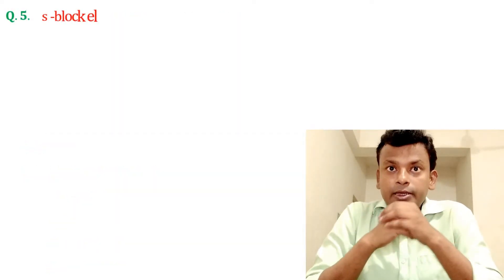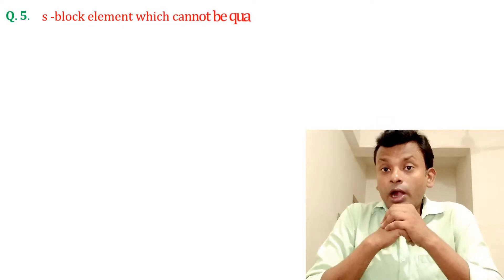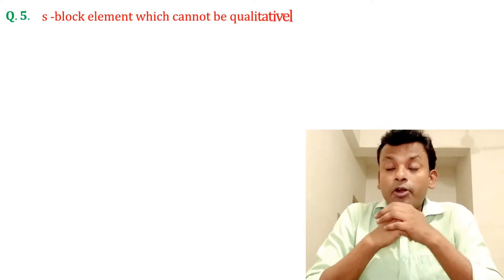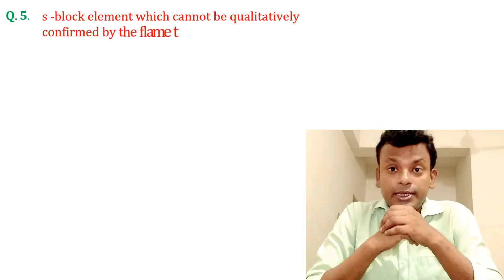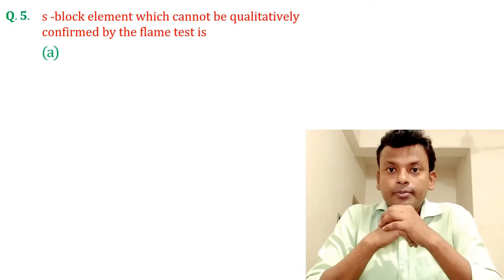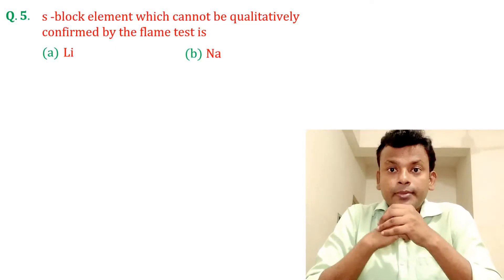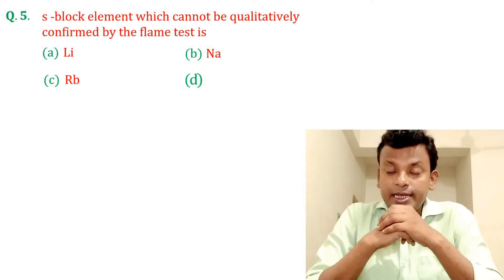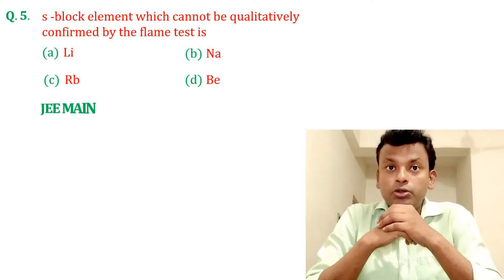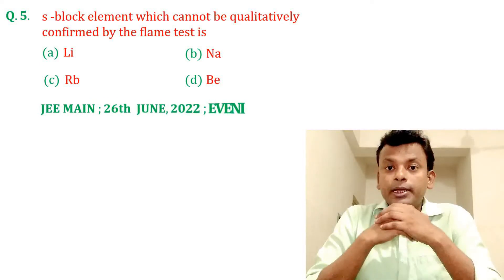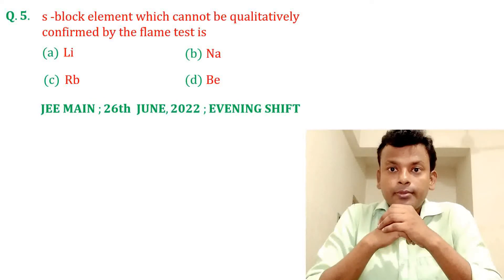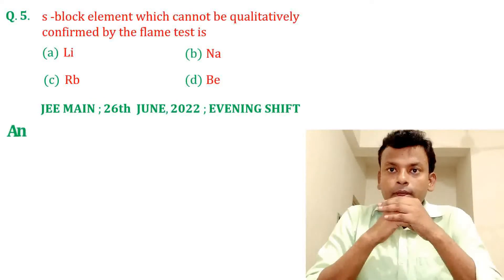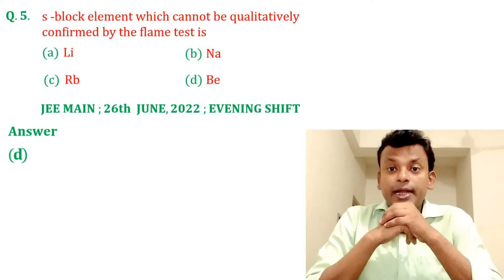Question number 5: The S-block element which cannot be quantitatively confirmed by the flame test is given in the options. This question was set in JEMN 26th June 2022 Evening Shift. Answer: Option D is the correct answer.